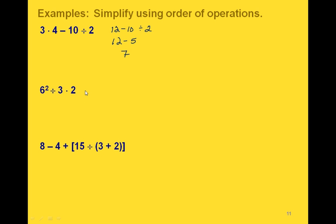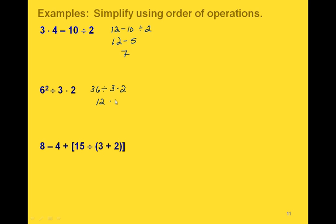In the next example, we have an exponent, so we work with that first. Six squared is 36, giving us 36 divided by 3 minus 2. The next operation is division: 36 divided by 3 is 12. Finally, 12 times 2 is 24.